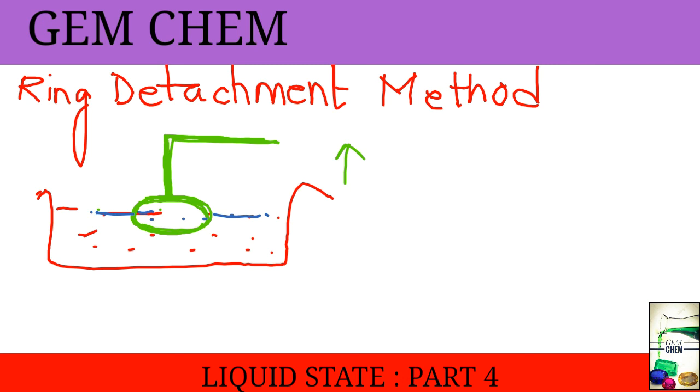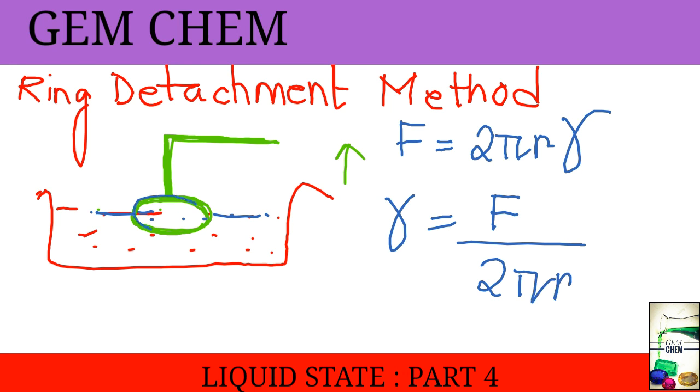So what is the formula to derive it? Basically, force is actually 2πr gamma. So the gamma is being measured from here. F/2πr. We know the radius of the platinum ring and we know the force. So we can derive the gamma.